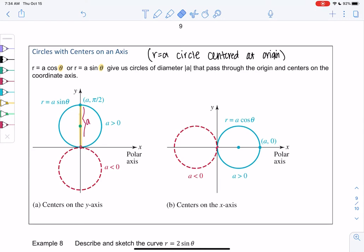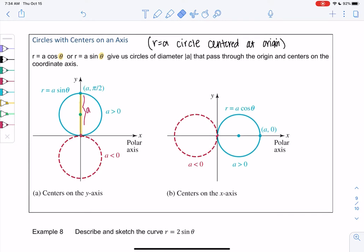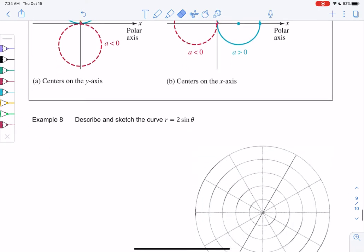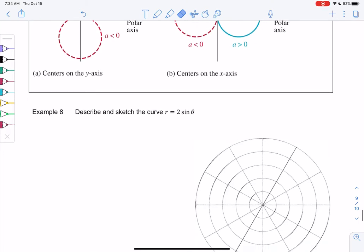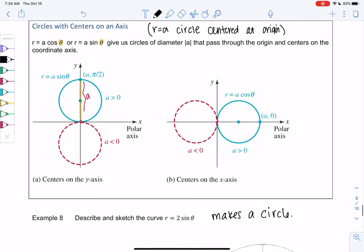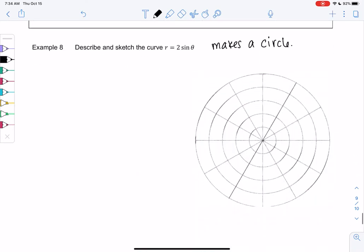For me, I don't memorize these four cases. I just know this pattern makes a circle, and I find a couple points. So when I see r equals 2 sine theta, I know it makes a circle. Then I figure out the rest of the details by finding a couple points, rather than trying to memorize all that.